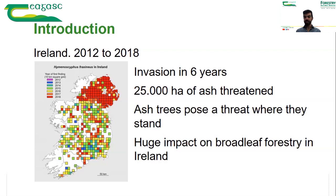Once ash trees are infected by ash dieback, their branches become weak and they can break and fall at any time, causing a threat to people around them — be it next to roads, in forests, in parks, everywhere where there are ash trees. If they get infected, they can actually be a threat to people.